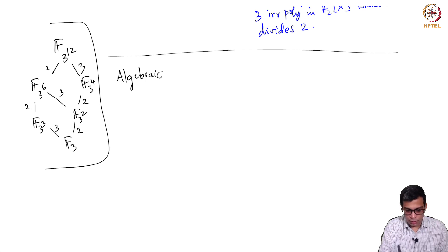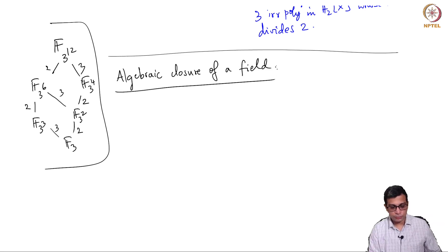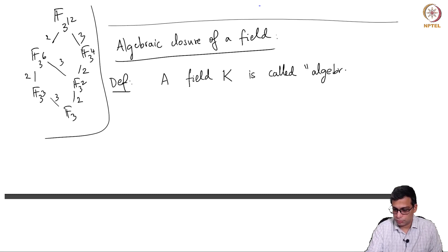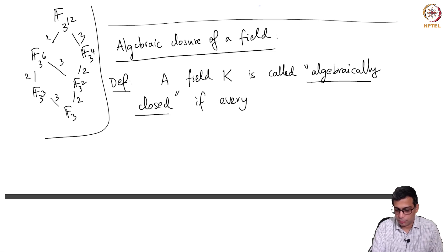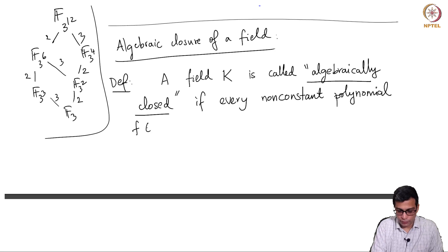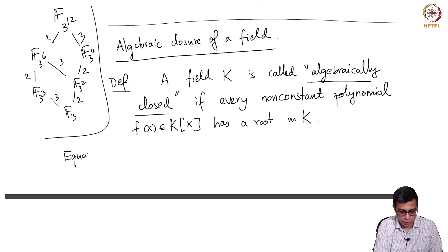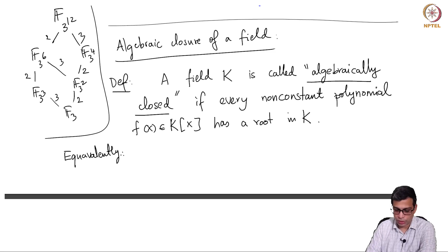The important notion I want to recall is the notion of algebraic closure of a field. Let me define: a field K is called algebraically closed if every non-constant polynomial f over K has a root. This is a very simple statement — every non-constant polynomial has a root in K. We exclude constants because a non-zero constant cannot have a root.